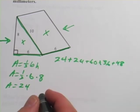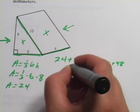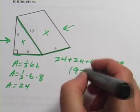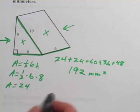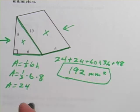And now we just have to add all of those together. 24 plus 24 plus 60 plus 36 plus 48. And I get 192, and this was millimeters, and it's area, so it's square millimeters. So those are some problems about figuring out surface area.